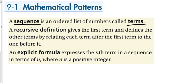We have two types of formulas that we use to make these sequences. The first is a recursive definition. The way you make a recursive definition is you get the first term and then define the next term by relating it to the previous term. An explicit formula tells us how to get to any term, so recursive tells us how to get from one term to the next. The explicit formula tells us how to get to the nth term.